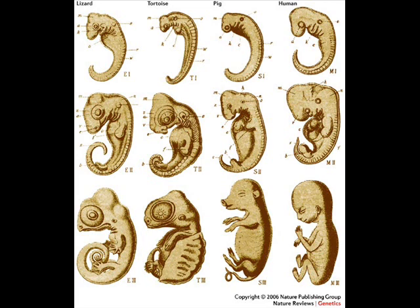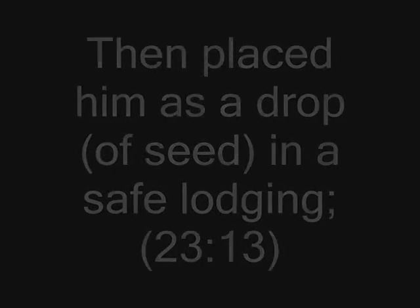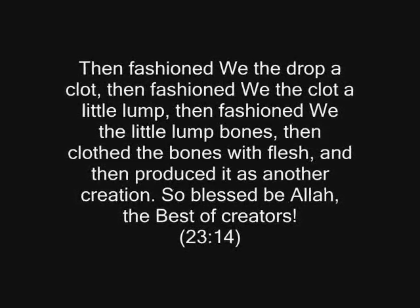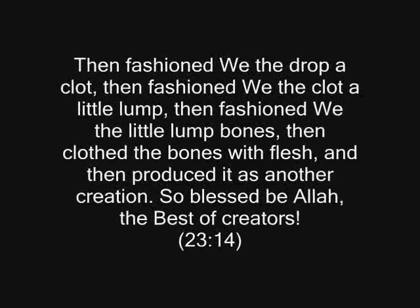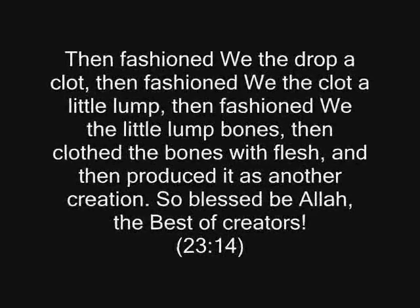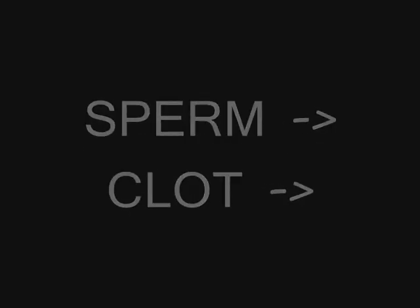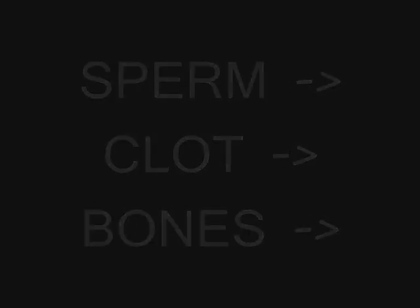Surah 23, Ayah 12 to 14 reads: 'Verily we created man from a product of wet earth, then placed him as a drop of seed in a safe lodging. Then fashioned we the drop a clot. Then fashioned we the clot a little lump. Then fashioned we the little lump bones, then clothed the bones with flesh, and then produced it as another creation. So blessed be Allah, the best of creators.' Several other Surahs mention this as well, notably 22:5 and 14:67. Let's look closely at the stages described: first a drop of seed — presumably sperm — then that forms into a clot, a clump of blood basically. Then that is fashioned into bones, and finally flesh is formed around the bones.